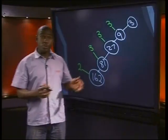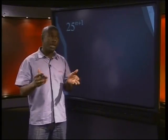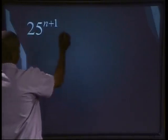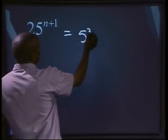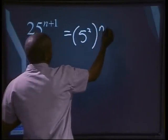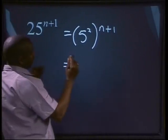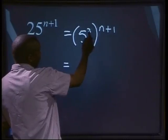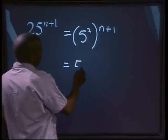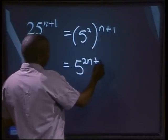Now let's write 25 to the power of n plus 1 as a power with a prime base. Prime factorize 25 and write the power in brackets. 25 is the same as 5 to the power of 2, all to the power of n plus 1. We can use the distributive law: 2 times n and 2 times 1. So our answer will be 5 to the power of 2n plus 2.